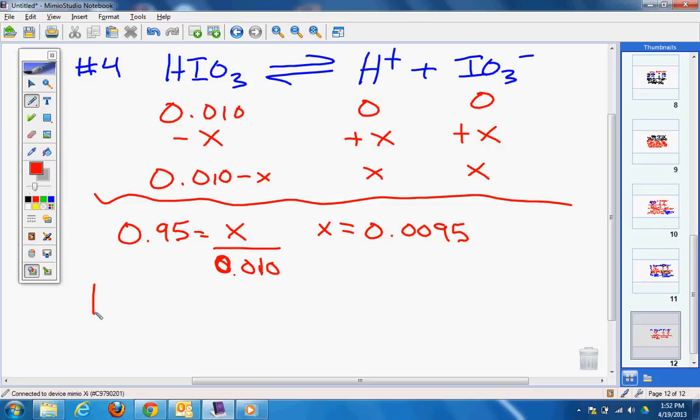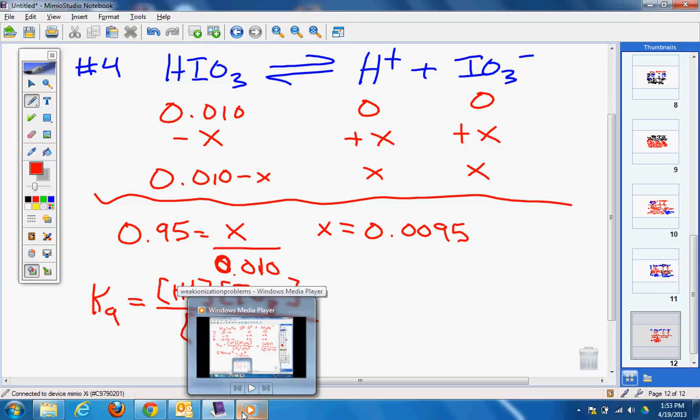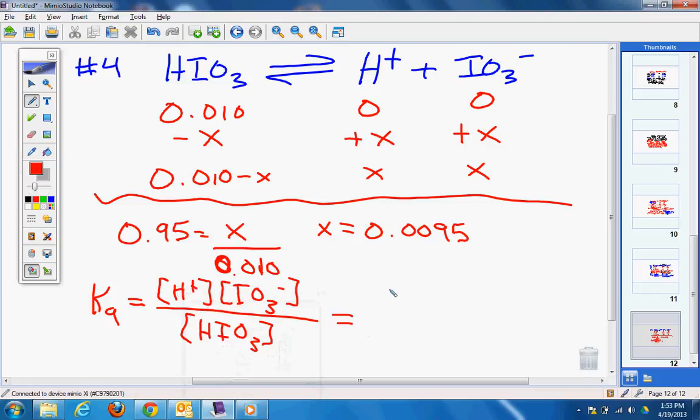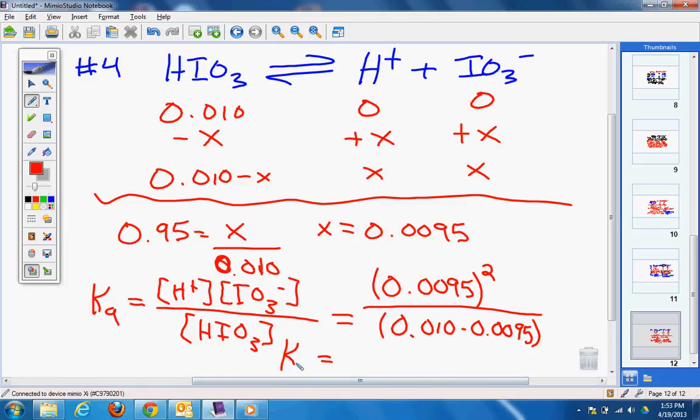And now we can figure out our Ka value. Again, I'm going to be really good and write out my Ka expression, which I know I always get a point for doing on the AP exam. What am I going to have? 0.0095 squared divided by 0.010 minus 0.0095. And I'm going to get my Ka value to be 0.1805.